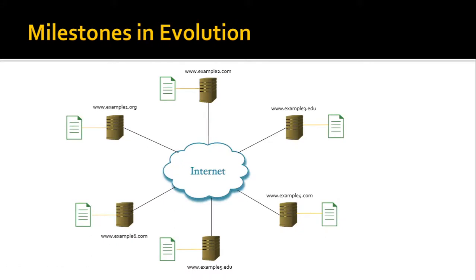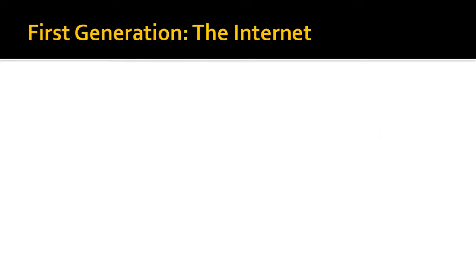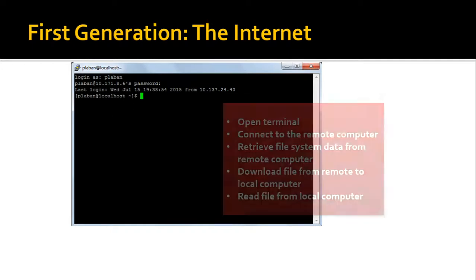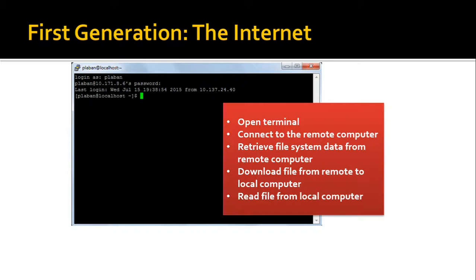The first milestone in this evolution is how you can set up a server, store a set of documents in the server, and get access to these documents from other computers in the network. In the first generation, the internet was accessed in a very tedious way — you had to open a terminal, connect to the remote computer with a command, retrieve data from the file system, download it to your computer, and then read the file. You had to do a lot of steps to access a document.